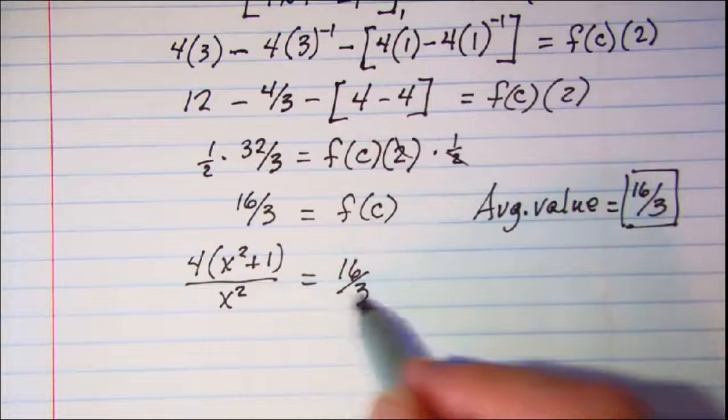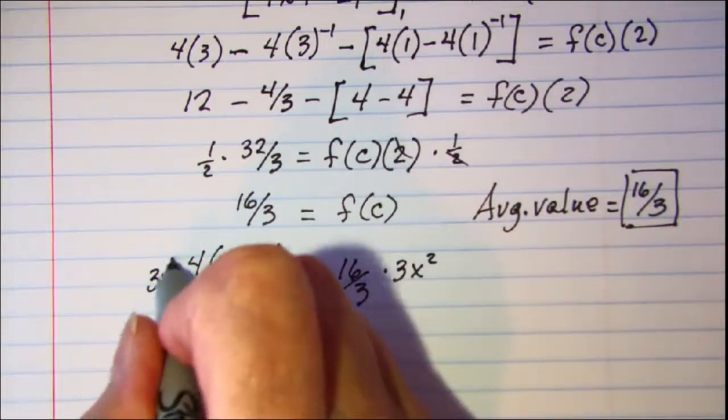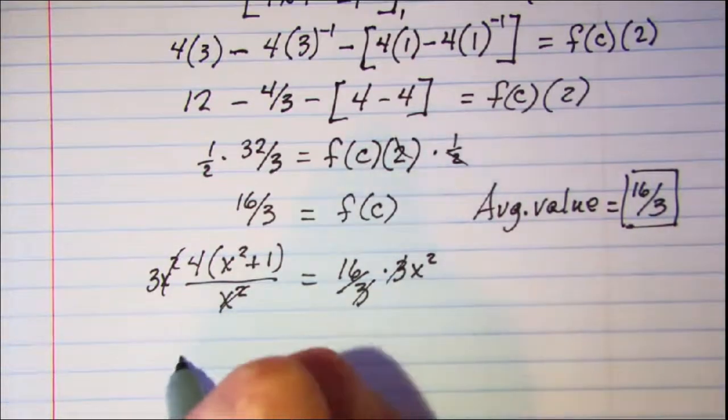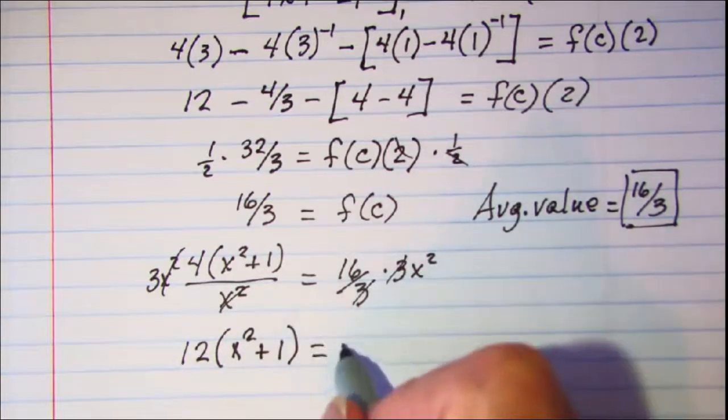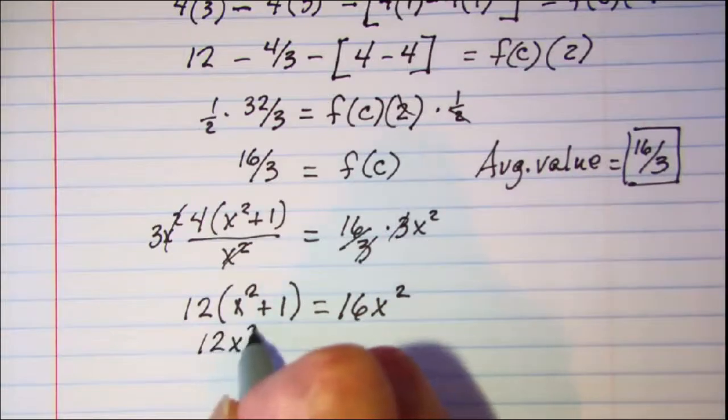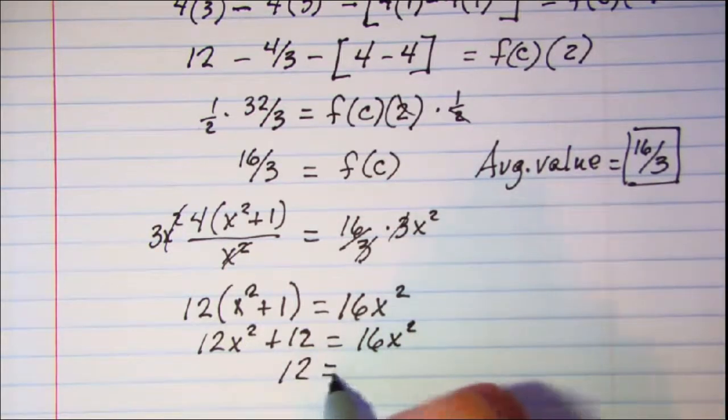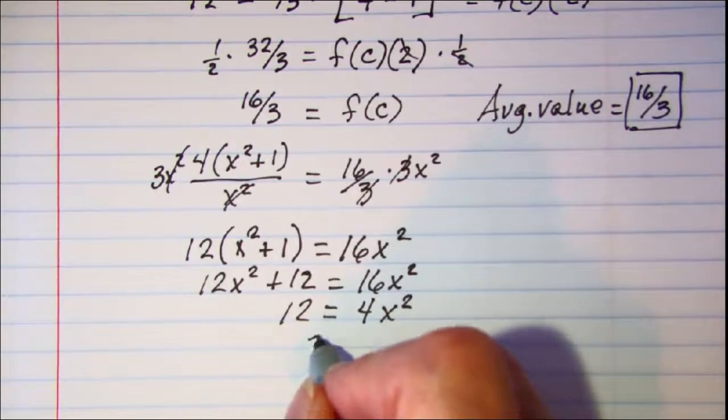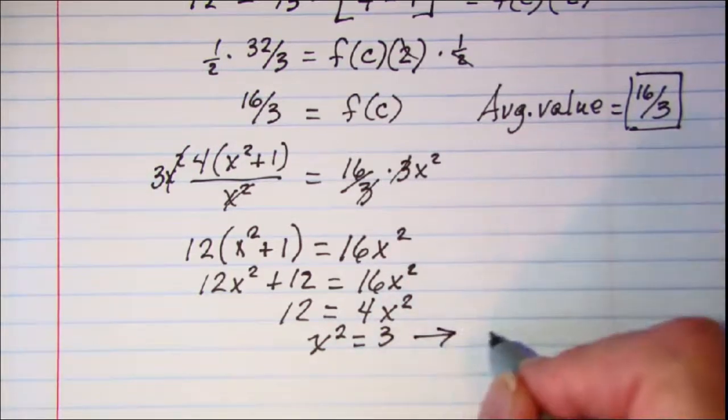So multiply both sides by x squared and 3. So the x squared cancel on the left side and the 3s cancel on the right side. So I have 12 times x squared plus 1 equals 16 x squared. This is 12 x squared plus 12 is equal to 16 x squared, so 12 is equal to 4 x squared. Divide both sides by 4 so we get x squared is equal to 3.